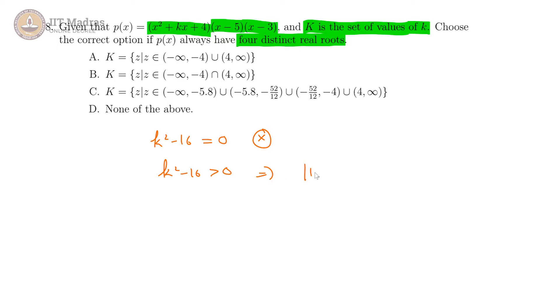That would indicate |k| > 4, giving us the interval (-∞, -4) ∪ (4, ∞) for the quadratic.